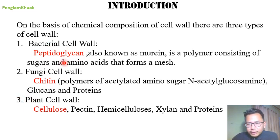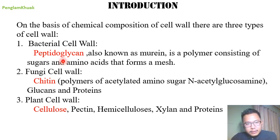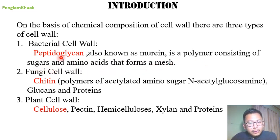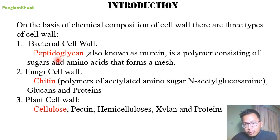In case of bacteria, the components which make up the cell wall are peptidoglycans — not only peptidoglycans, but also sugars and amino acids. Peptidoglycans are the major components of the bacterial cell wall.